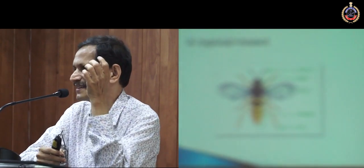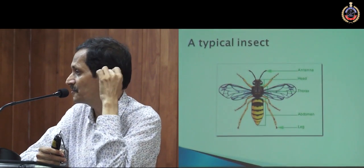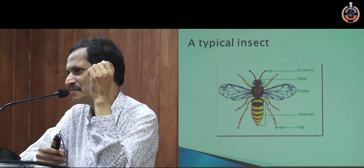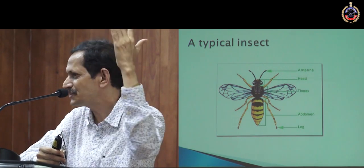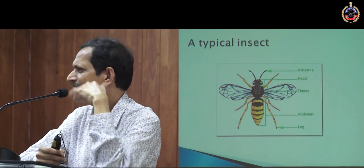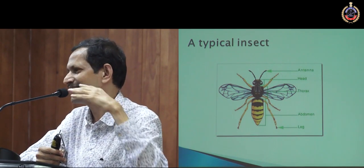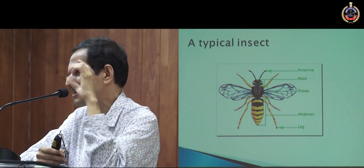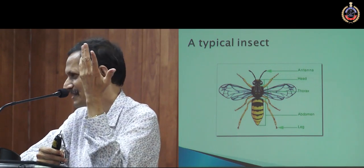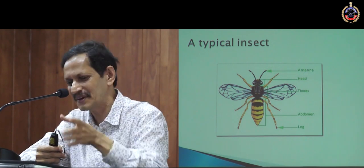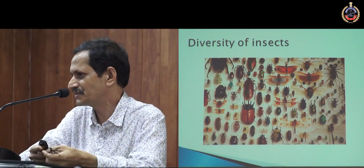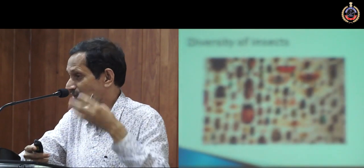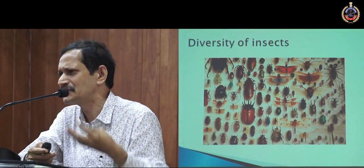This is a typical insect. The name 'insect' has come from 'in' and 'sect,' meaning 'cut into.' That means if you see the body of an insect, it has got three very distinct parts: head, thorax, and abdomen. So this is just to give an idea about the diversity of insects. There are so many types — very small insects, big insects, some microscopic insects. It's just so diverse.